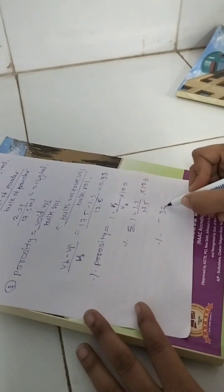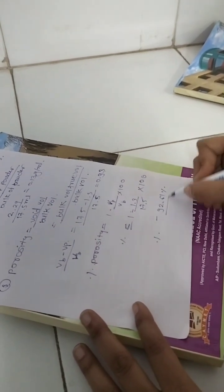Now the end result concludes that the bulk density of powder sample is 92.6%.